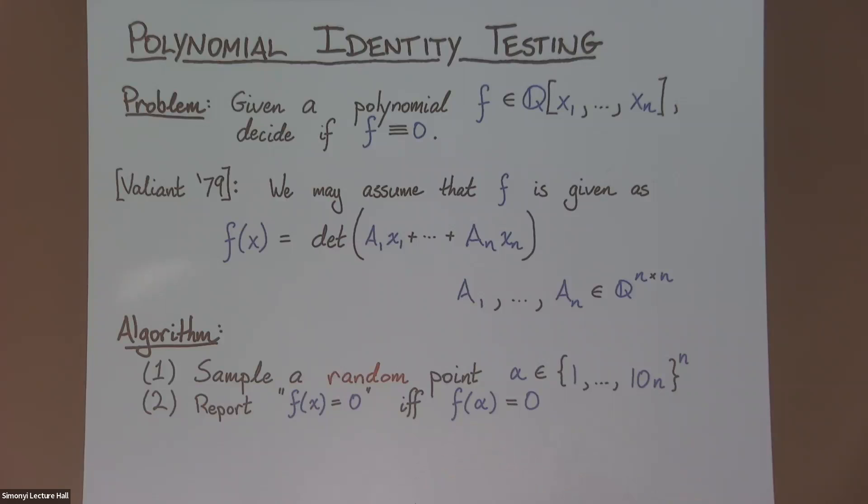But we're doing this on a computer. We need to discretize things. So I'll just pick a random point from some integer grid. And this algorithm, as I wrote it down, will make errors about 10% of the time. Now, this is a fast algorithm. It's a simple algorithm, but it uses a lot of randomness.